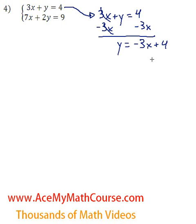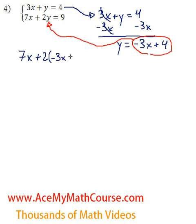Great, so now I can take this and replace it for y from the second equation. So we have 7x plus 2 times negative 3x plus 4 equals 9.